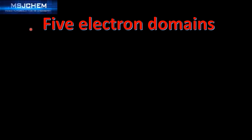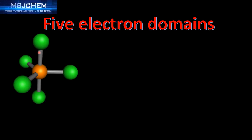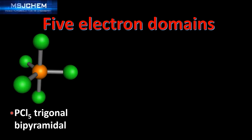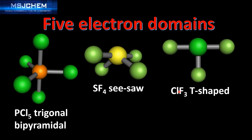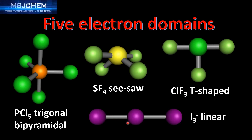Next we look at some 3D representations of these molecules. We'll start with PCl5, which has the molecular geometry trigonal bipyramidal. The bond angle is 90 degrees, and the bond angle around the center between the three equatorial atoms is 120 degrees. The next example is SF4 which has the molecular geometry seesaw. Then we have chlorine trifluoride which is T-shaped, and finally I3 negative which is linear.